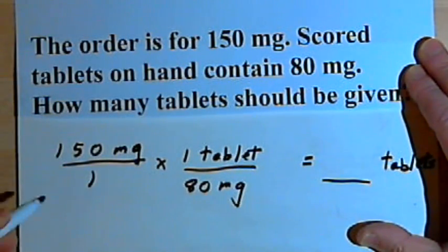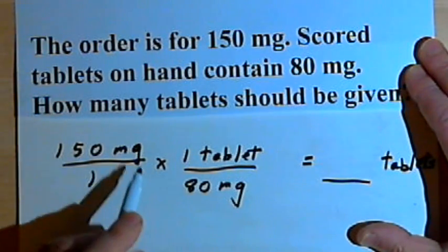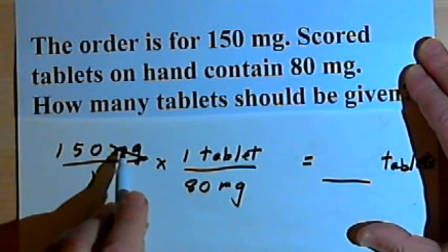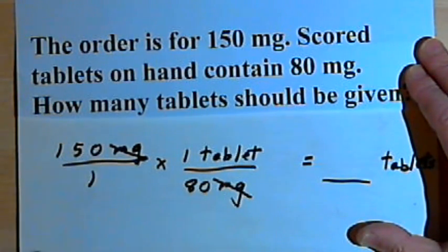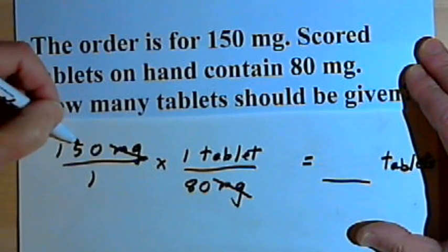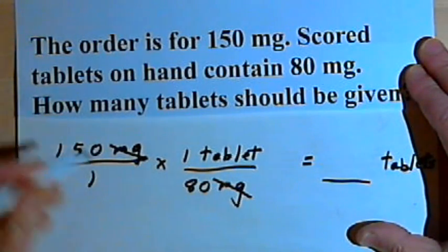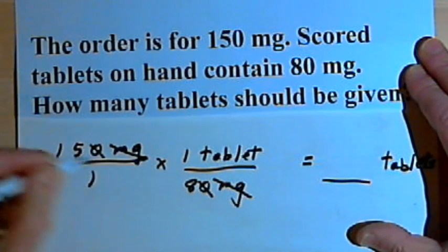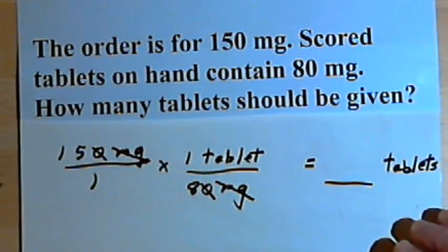Now, before multiplying, I'll see what I can simplify. I can simplify the units. I'll cross out the milligrams in this numerator and this denominator. I've got 150 as a numerator and 80 as a denominator. So I could divide both of those by 10. That would leave me with 15 and 8. I can't simplify this anymore.